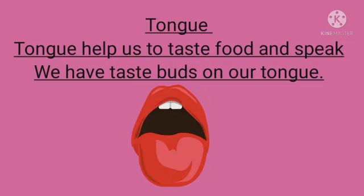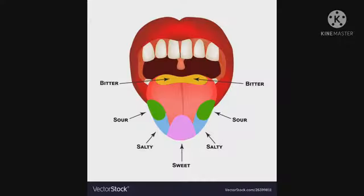Let us discuss about another characteristic — that is tongue. Tongue helps us to taste food and speak. We have taste buds on our tongue which help us differentiate between the four basic tastes: sweet, sour, salty and bitter. As you can see in the picture, the four basic tastes are also being depicted.